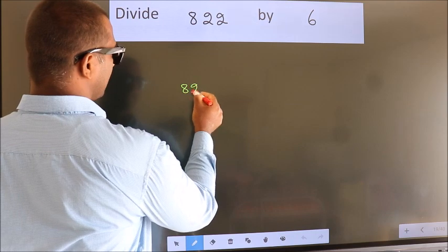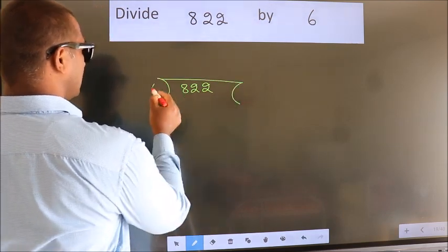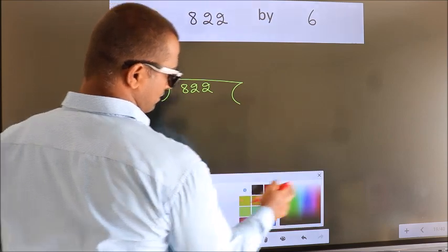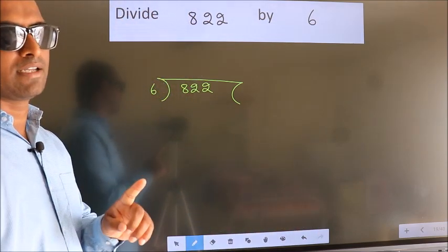822 here, 6 here. This is your step 1. Next,